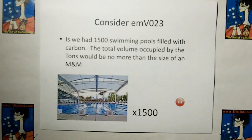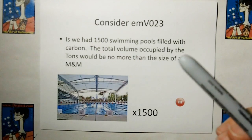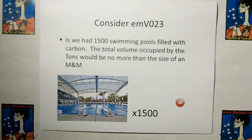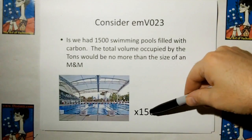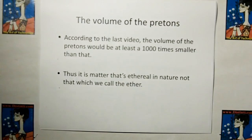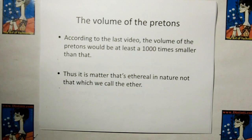Let's consider video number 23. If we had 1,500 swimming pools filled with carbon, the total volume occupied by the atoms would be no more than the size of an M&M — 1,500 Olympic-sized swimming pools filled with carbon. And from the last video, the volume of the pretons would be at least 1,000 times smaller than that, probably more like a million. Thus, it's the matter that's ethereal in nature and not what we call the Ether.